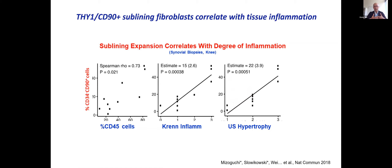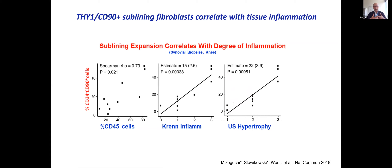We then asked whether this is really just a marker, or does it actually correlate with inflammation. Using a cohort of patients with joint biopsy samples, we quantified the proportion of sublining fibroblasts against three measurements of inflammation: CD45-positive as a rough measurement of immune cell infiltration, a histological inflammation score, and an ultrasound score of synovial hypertrophy. What we saw is that not only are sublining fibroblasts expanded in RA, but their abundance correlates with all three independent measurements of inflammation.